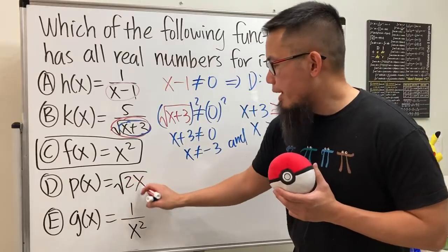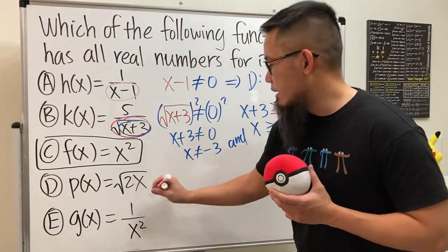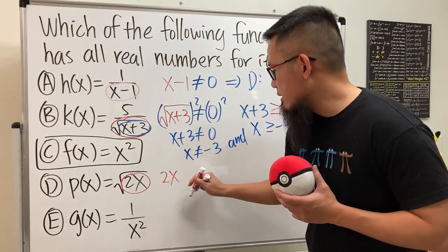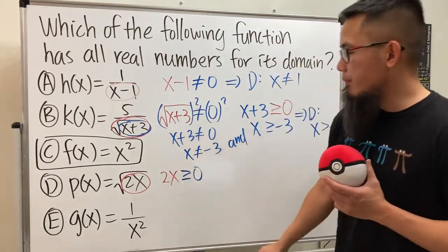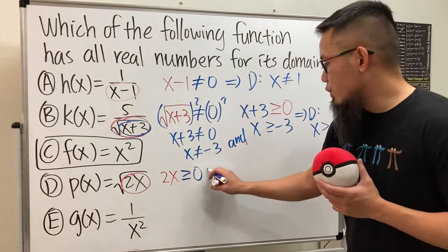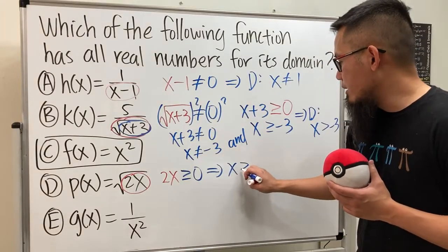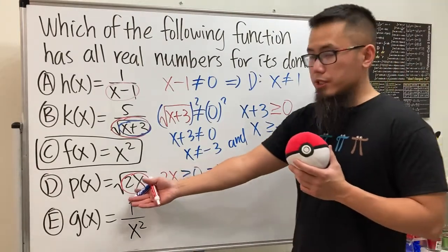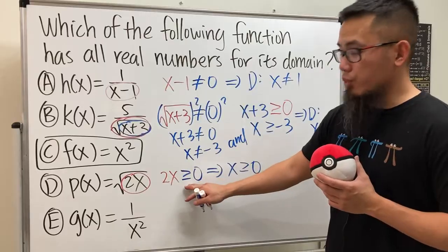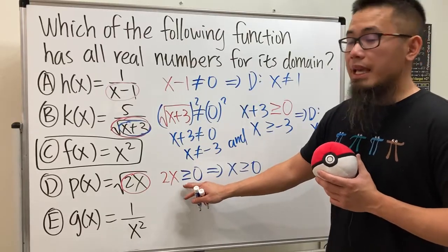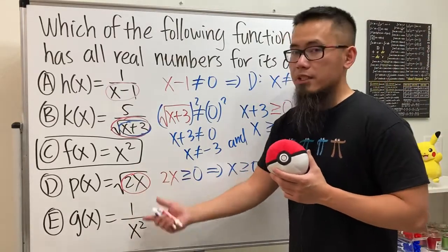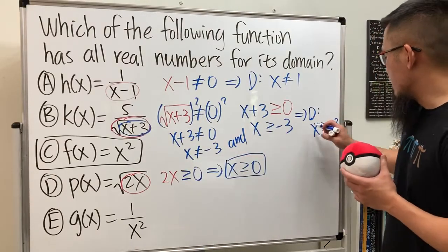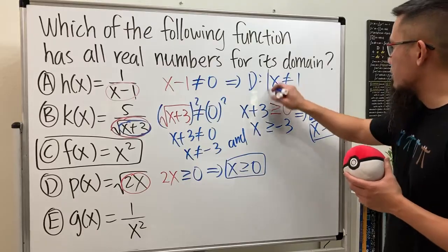For function D, we have 2x under the square root, and that's the only restriction. We set 2x greater than or equal to 0, then divide both sides by 2, giving x is greater than or equal to 0. Since this square root is not in the denominator, the domain is simply x is greater than or equal to 0.